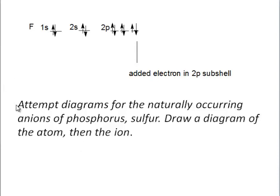At this point, you're ready to attempt diagrams for the naturally occurring anions of phosphorus and sulfur. Draw a diagram of the atom, then the ion.